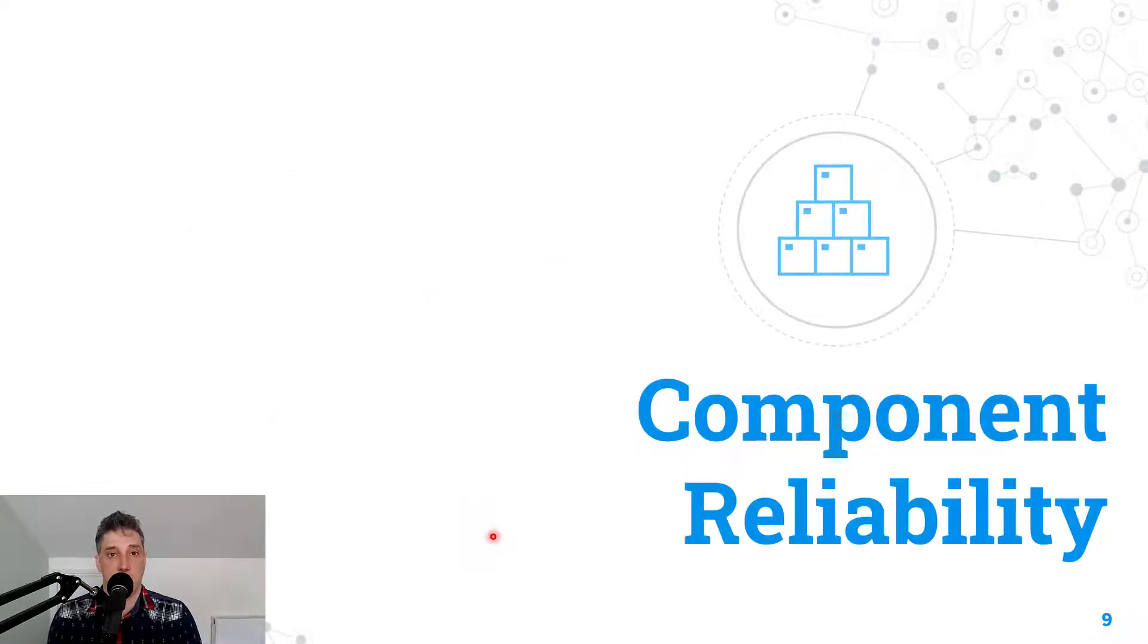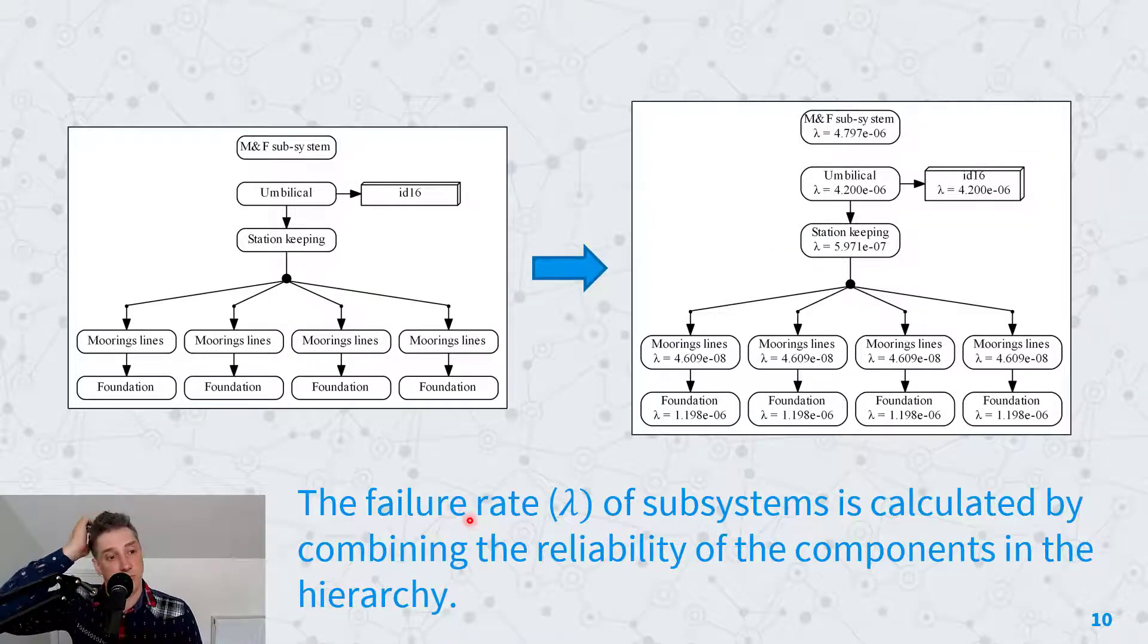Let's talk a little bit about the component reliability model in DTOcean. For the subsystems that it designs, the balance of plant subsystems, DTOcean creates networks of components to represent subsystems and then the higher level subsystems.